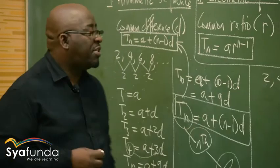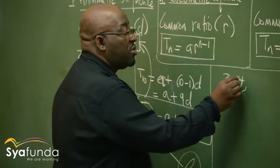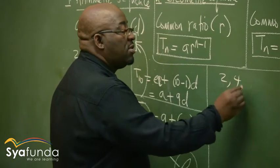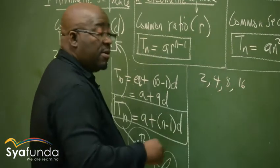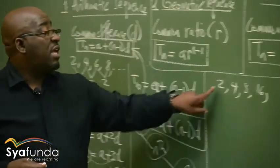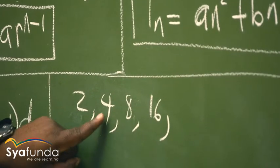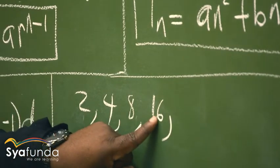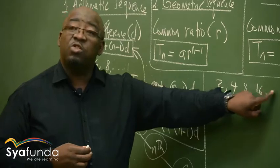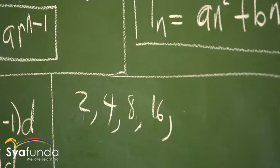Let's make it a geometric sequence. 2 × 2 = 4, × 2 = 8, × 2 = 16. So the first term is 2, the second term is 4, the third term is 8, the fourth term is 16. The next term would be 16 × 2 = 32. That's how we get this sequence going.